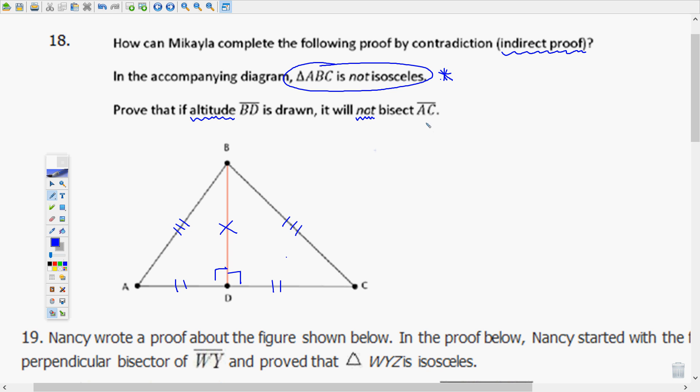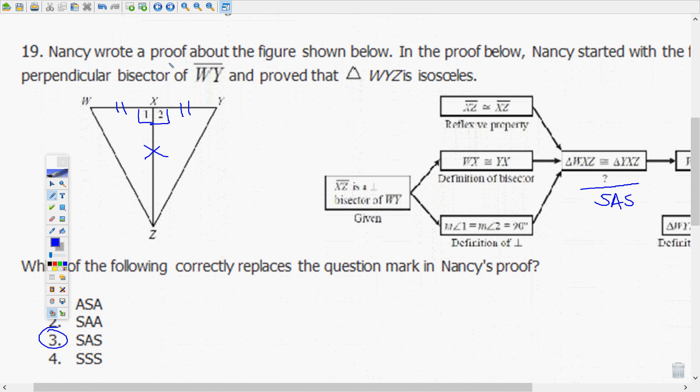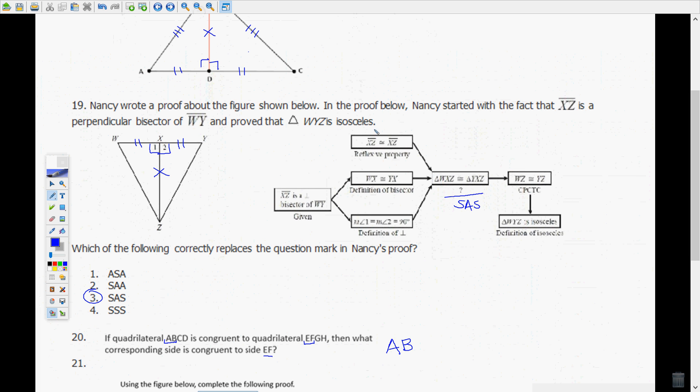Now you can say altitude BD does not bisect AC. So listen to that again, rewind it, listen to it again. Also you can look it up on the Escambia County website and they write it out completely.